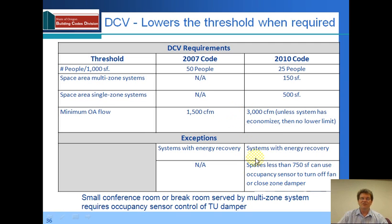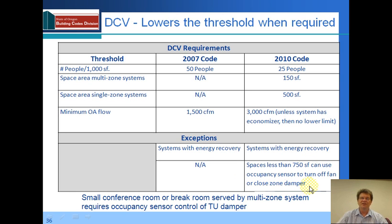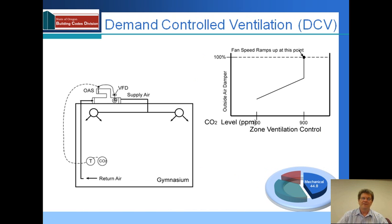One thing to note is that demand-controlled ventilation can be controlled with a CO2 sensor, which senses the CO2 concentration in the room, which indirectly tells the number of people. But if the space is less than 750 square feet, it can use an occupancy sensor to turn the fan off or close the zone damper — a less expensive alternative that still provides good demand-controlled ventilation. In a typical system, you might or might not have a variable frequency drive depending upon the size, but you will always have an outside air damper that is controlled with a damper motor, in turn controlled with a CO2 sensor in the space.